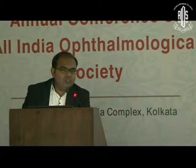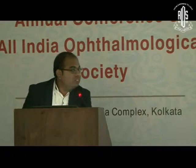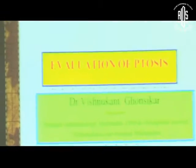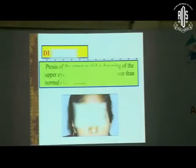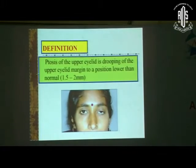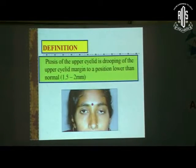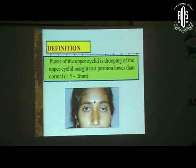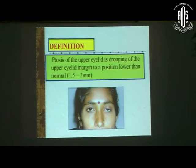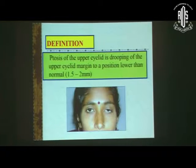Good afternoon. At the outset I would like to thank AIOS for giving me this opportunity for presentation. I will be speaking about the evaluation of ptosis. As we all know, ptosis of the upper eyelid is drooping of the upper eyelid margin to a position lower than normal, which is 1.5 to 2 mm.